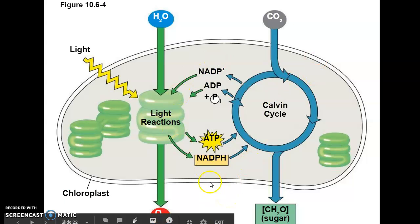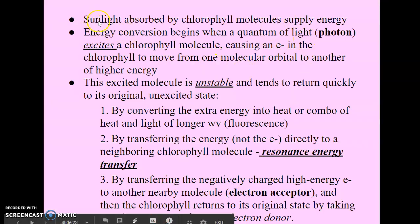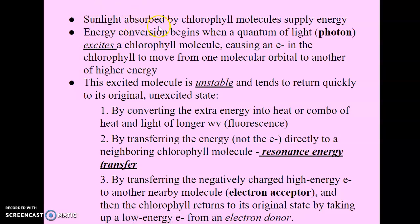Here's our overview diagram. We're talking about the light-dependent reactions right now. Sunlight is our energy source in the light-dependent reactions — sunlight will be absorbed by the chlorophyll pigment molecules and that will supply the energy for the rest of the reaction. Energy conversion begins when a quantum of light, called a photon, excites a chlorophyll molecule.